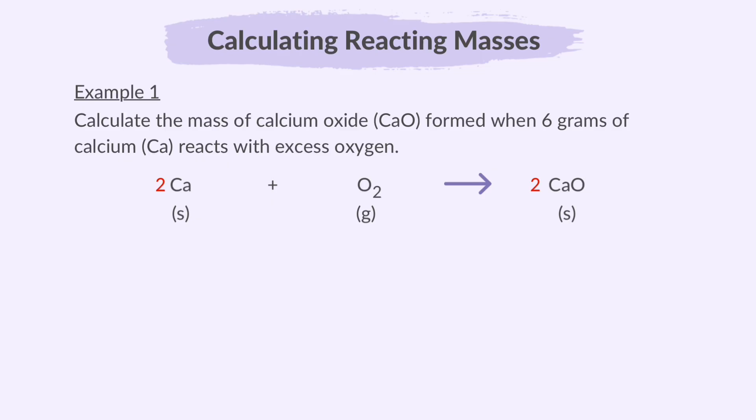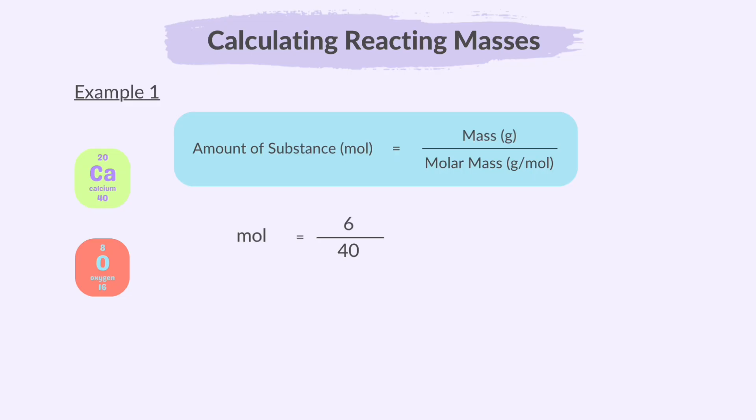We are given the mass of calcium and we are asked to find the mass of calcium oxide produced. The mole ratio is 2 to 2. Simplified, it becomes 1 to 1. We first find the number of moles in 6 grams of calcium. Applying the mole formula, we get 0.15 moles. The mole ratio of calcium to calcium oxide is 1 to 1 according to the balanced equation. That means 0.15 moles of calcium will produce 0.15 moles of calcium oxide.